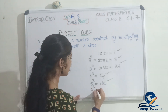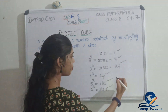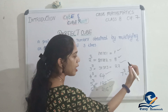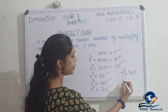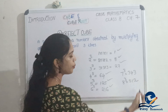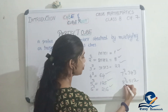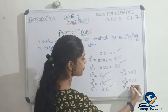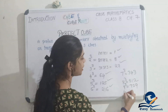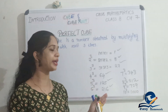Next is 6 cubed, which is 216. Then 7 cubed is 343. 8 cubed is 512, which is a perfect cube. 9 cubed is 729. Then 10 cubed is 1000. These are the cubes from 1 to 10.